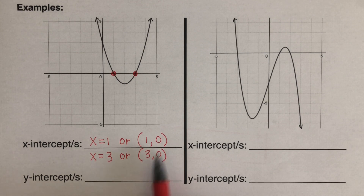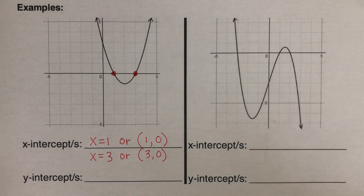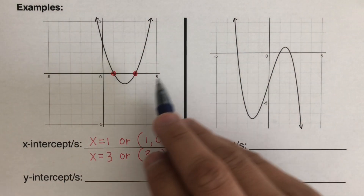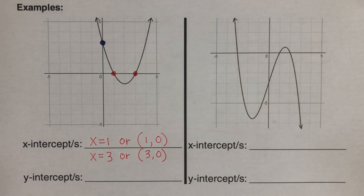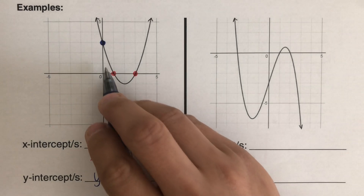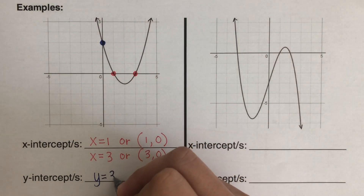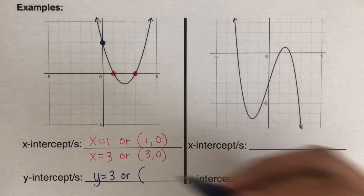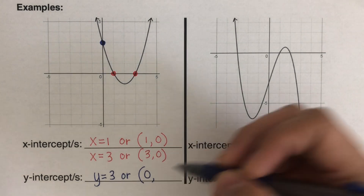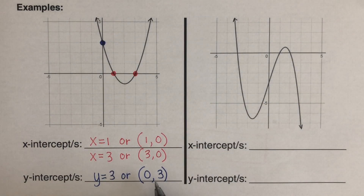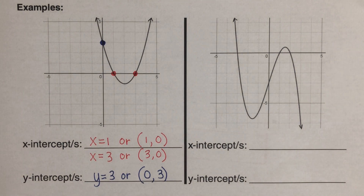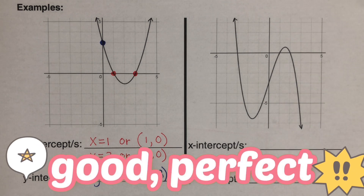Now for the y-intercept, we look at where the line crosses the y-axis. That point is our y-intercept, and we can write it as y equals 3, or in coordinate form (0, 3). So again, the y-intercept is the value of y when x is zero.